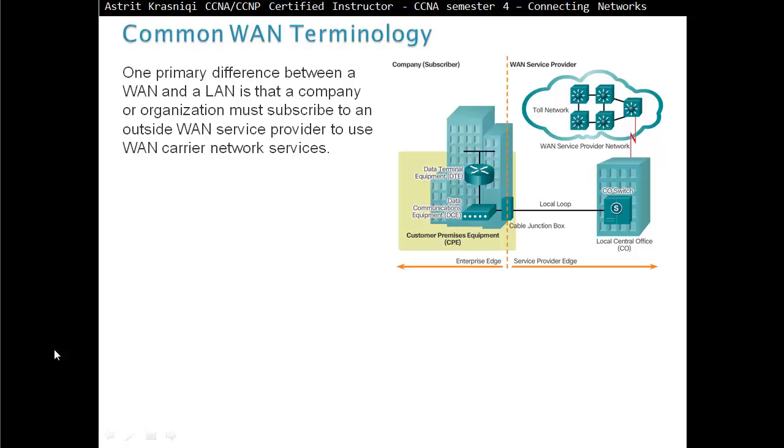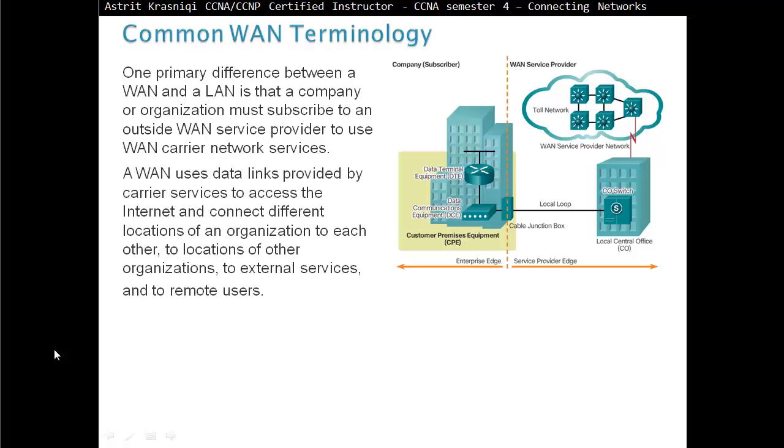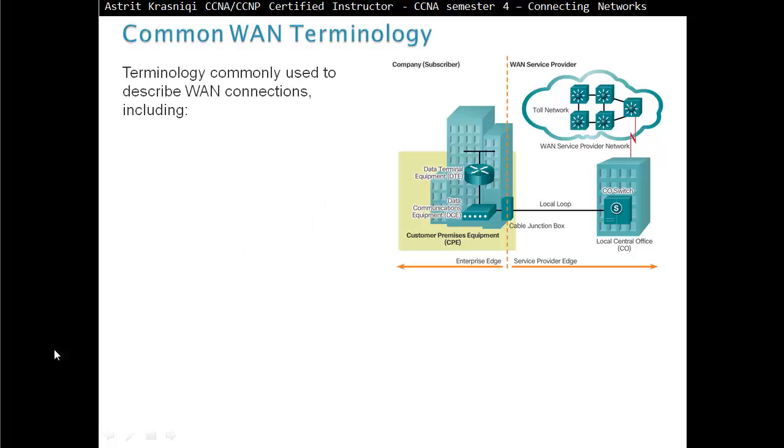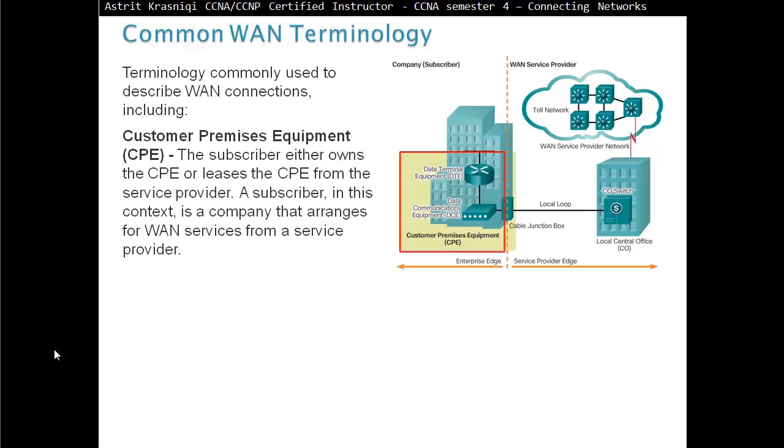One primary difference between a Wide Area Network and Local Area Networks is that a company or organization must subscribe to an outside WAN service provider to use carrier network services. A WAN uses data links provided by carrier services to access the Internet and connect different locations of an organization to each other, to locations of other organizations, to external services, and to remote users. The physical layer of WAN describes the physical connection between the company network and the service provider network. Terminology commonly used to describe the WAN connection includes Customer Premises Equipment or CPE for short. The subscriber either owns the CPE or leases the CPE from the service provider. A subscriber in this context is a company that arranges for WAN services from a service provider.